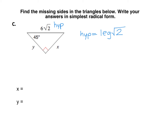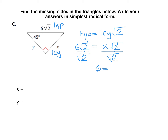So here if we substitute in our values, the hypotenuse is 6 root 2, and my legs are x and y — I'm just going to use x. Once I find x, I've also found y, since the legs are congruent. So 6 root 2 has to be equal to x root 2, and now to get x by itself, we just divide each side by root 2, and the root 2 over root 2 cancels out, so we're down to just 6 equals x.